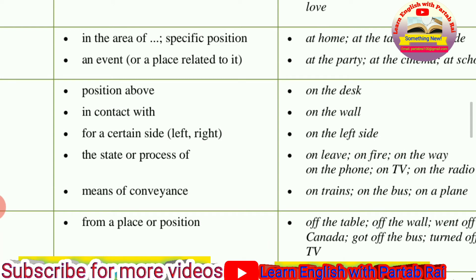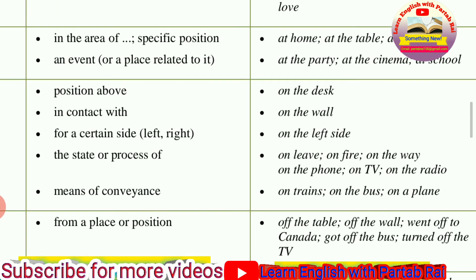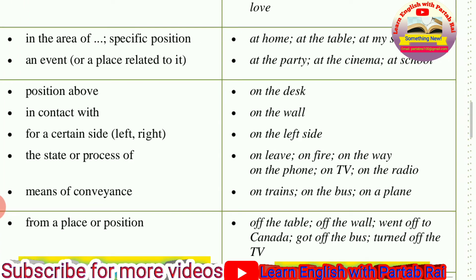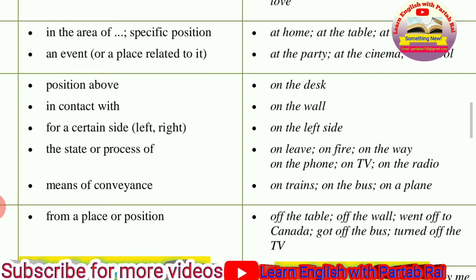ON is also used for means of transportation: on the train, on the bus, on the airplane. When you want to particularize a specific transportation, you use the preposition IN instead. If you want to understand this concept clearly — when to use IN versus ON for transportation — you can follow the link mentioned in the description to find a complete video on that topic.